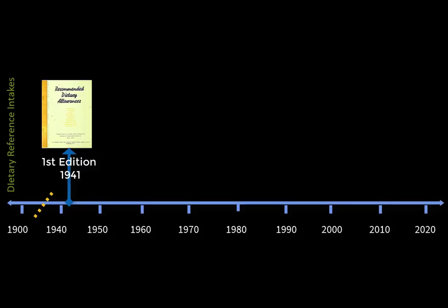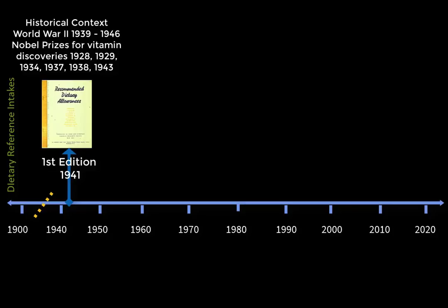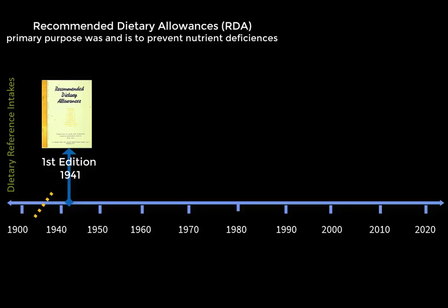The RDAs were first established in 1941. It can be helpful to remember that this was during World War II and our understanding of vitamins was very new. The first vitamin — thiamin — was isolated in 1926, and Nobel prizes related to vitamin discoveries were won in 1928, 1929, 1934, 1937, 1938, and 1943. In an effort to affect national defense, RDA standards were developed to prevent vitamin deficiency in soldiers, and eventually they were expanded to the average citizen.